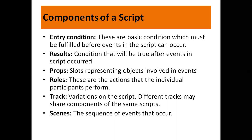The result condition is what will be true after events in the script have occurred — for example, when the person catches the bus. Props are the slots representing objects involved in the events; in catching a bus, the bus itself is the object. Roles are the actions that individual participants perform — the one who wants to board a bus is the actor. Track refers to variations on the script; different tracks may share components of the same script. And a sequence of events occurs one after the other.